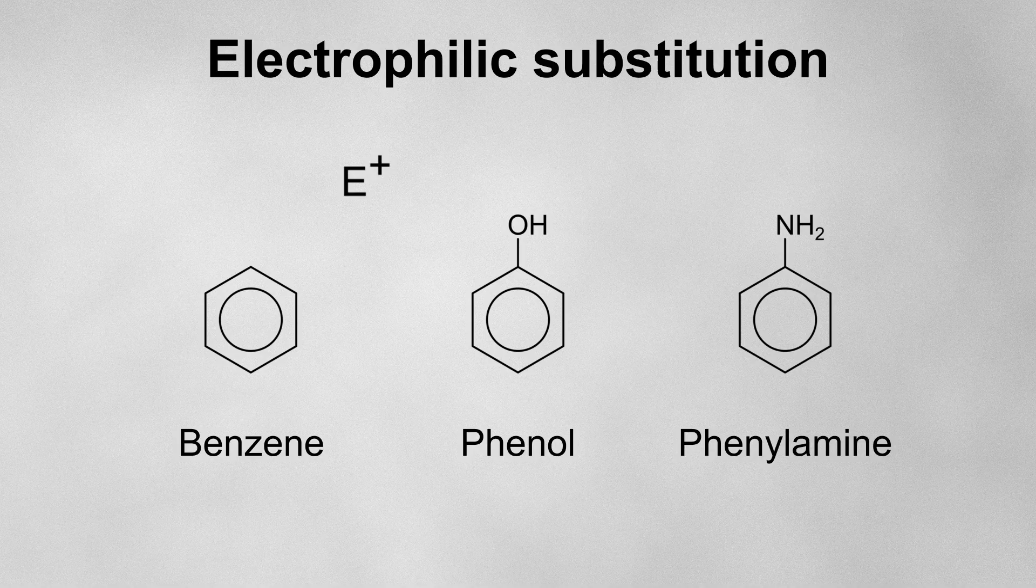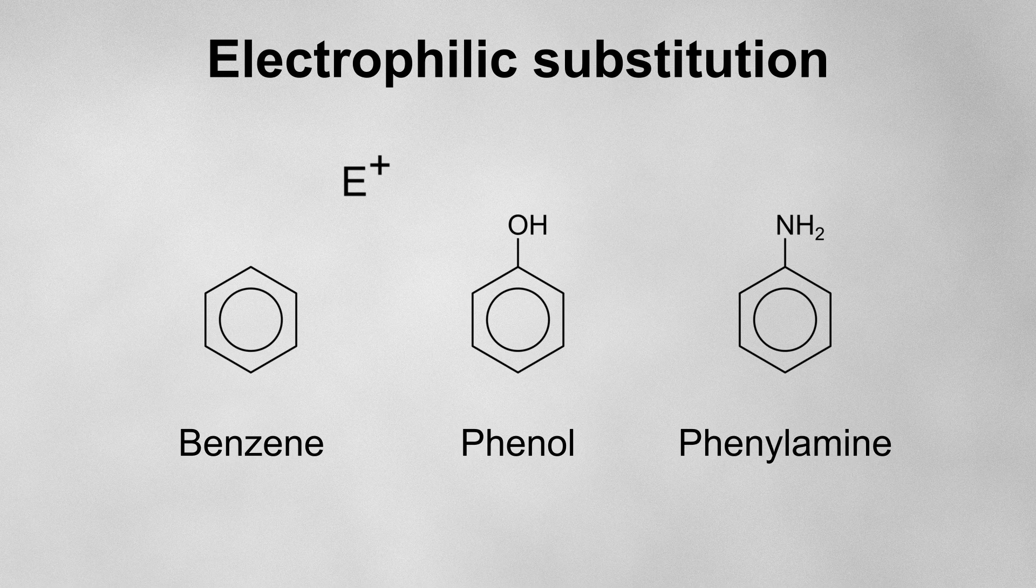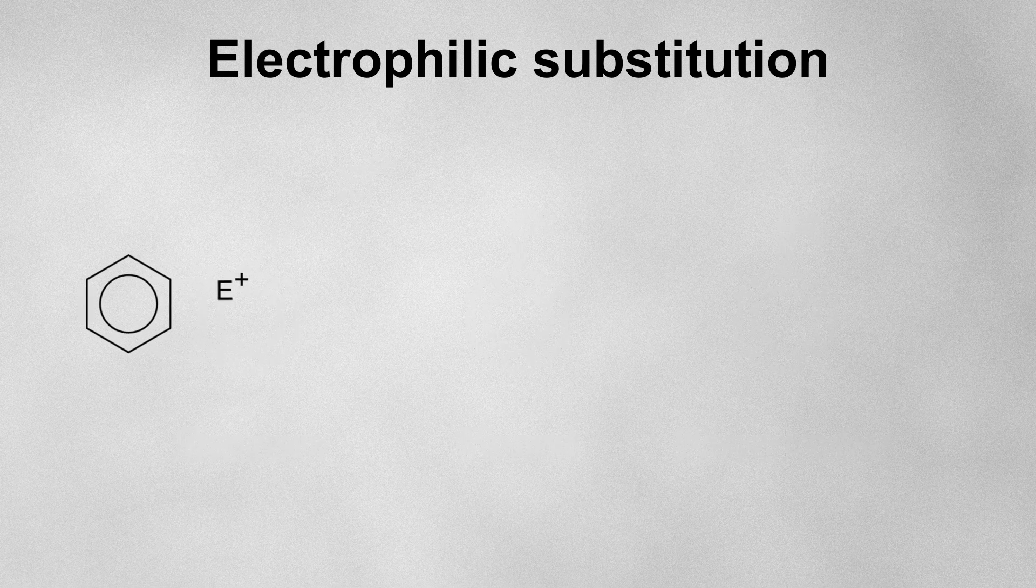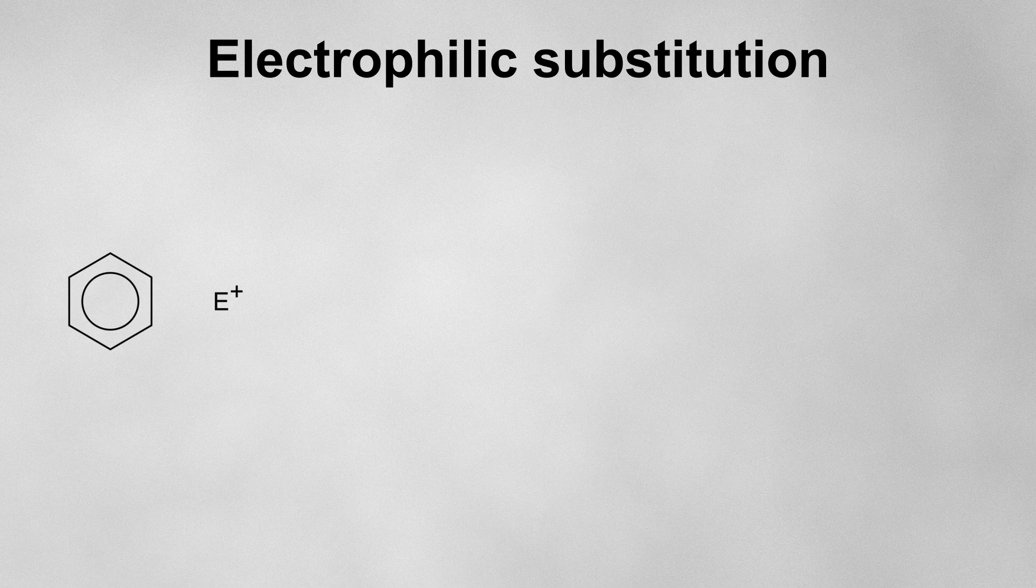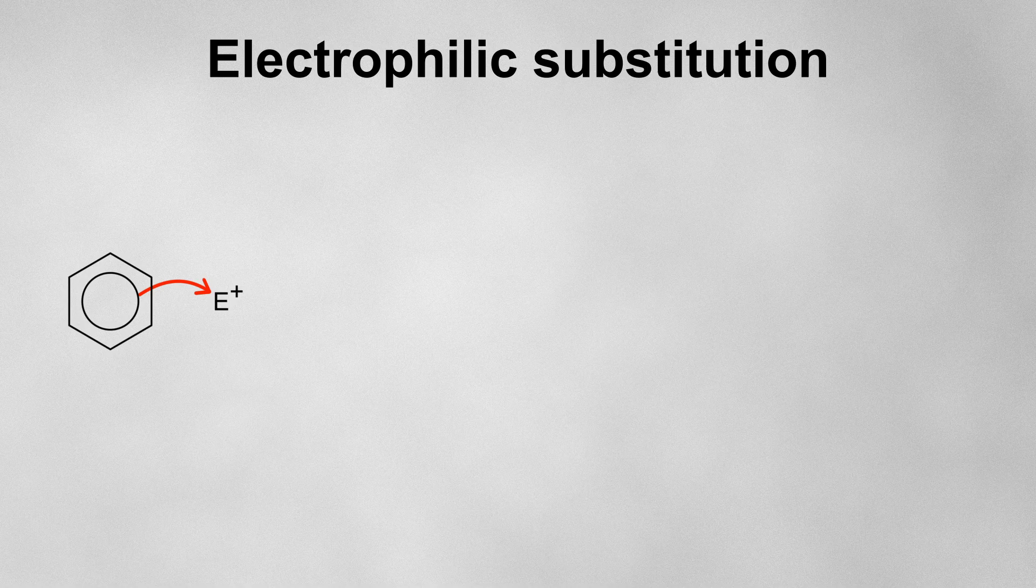Let's take a look at the electrophilic substitution mechanism for the reaction between benzene and a positively charged electrophile. As the electrophile approaches the benzene ring, it attracts the electrons in the delocalised pi system. A pair of these electrons are then drawn out to form a bond with the electrophile.